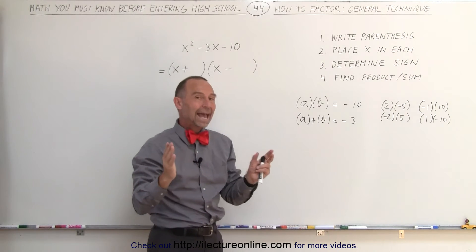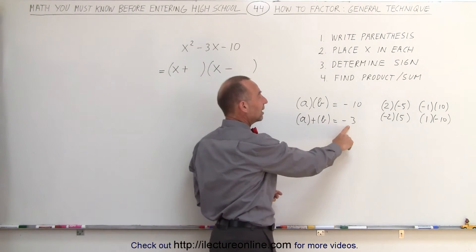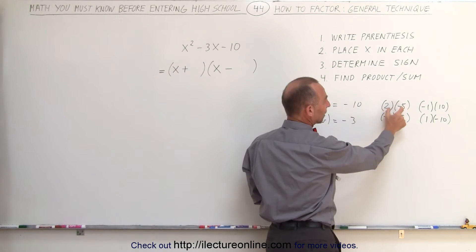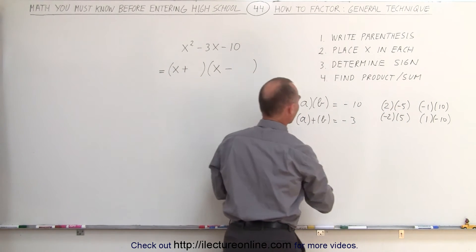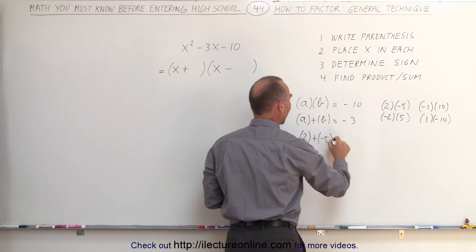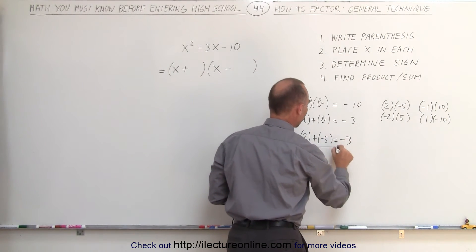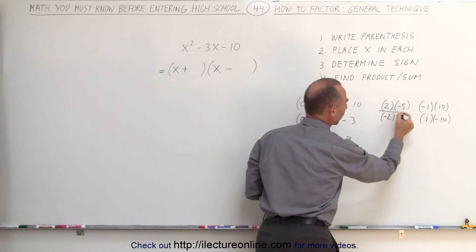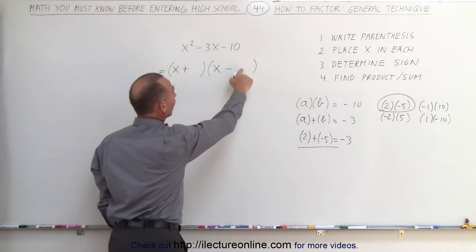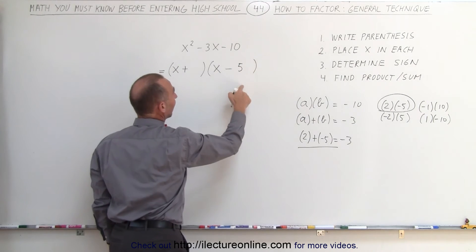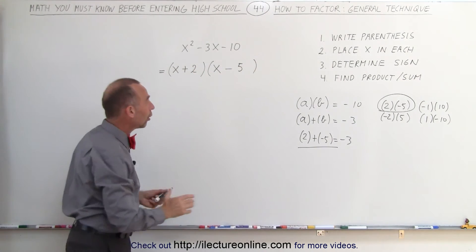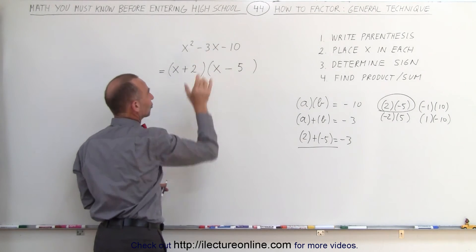However, when you add the two numbers together you should get negative 3, and of all the choices, the only two numbers that add up to negative 3 are positive 2 and negative 5. So 2 added to negative 5 gives negative 3 — bingo, those are the two numbers you're looking for. You put the negative 5 here and the positive 2 there. This is what we call the factored form of this trinomial.